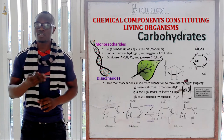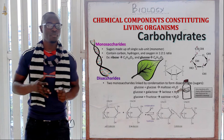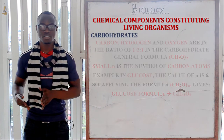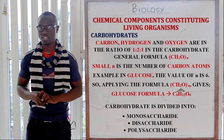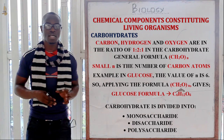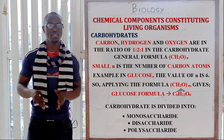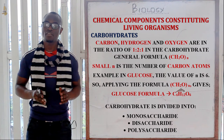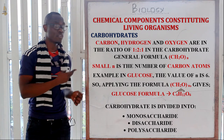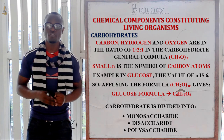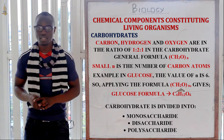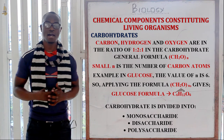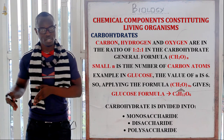Let's start with carbohydrates, which are simply referred to as sugars. They contain carbon, hydrogen, and oxygen in their compound structure, in a ratio of 1:2:1, where N represents the number of carbon atoms. Carbohydrates are divided into three types: monosaccharides, disaccharides, and polysaccharides.